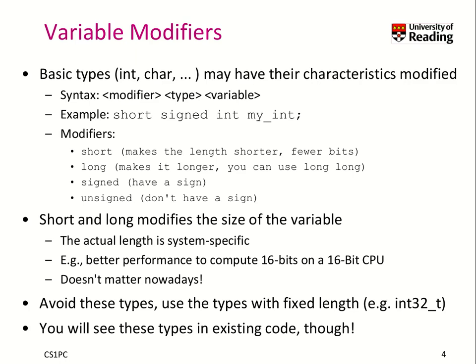Let's first start with variable modifiers. When we talk about basic types such as int or char, we may have their characteristics modified — particularly how many bits are stored in these data types and whether they are signed, which means you can have negative numbers stored typically in two's complement, or are they only positive numbers. You can use a modifier, and an example is given here.